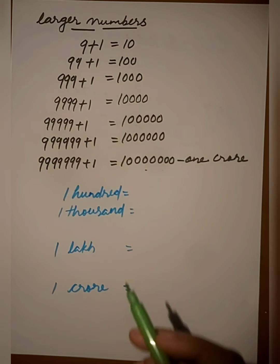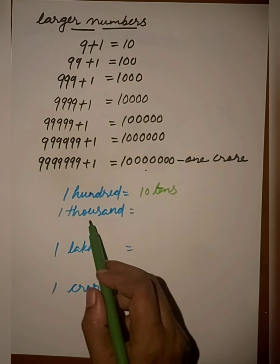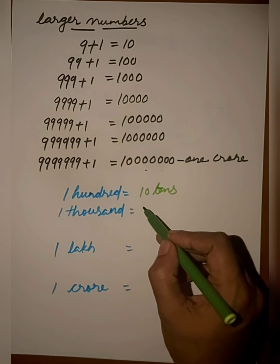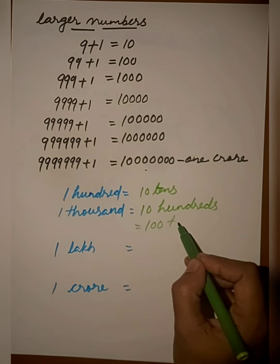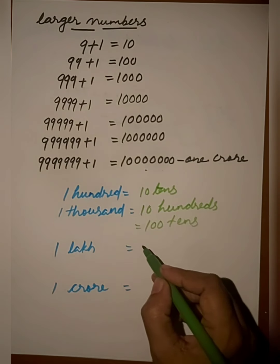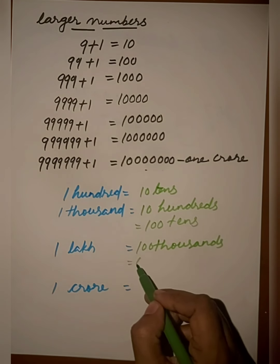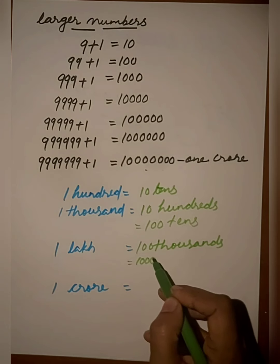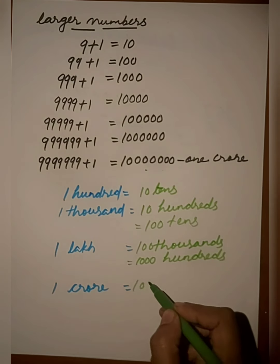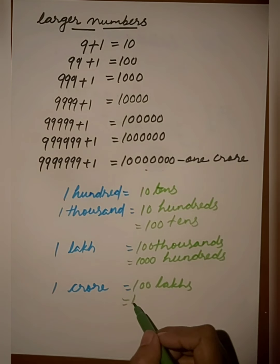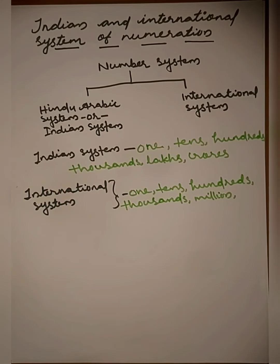100 is equal to 10 tens. 1000 is equal to 10 hundreds, which is also equal to 100 tens. 1 lakh is equal to 1,00,000, which equals 1000 hundreds. 1 crore is equal to 100 lakh, or 10 thousand thousands.